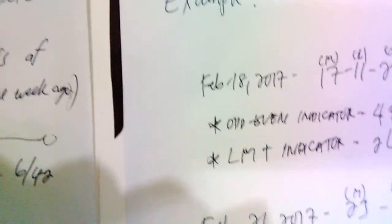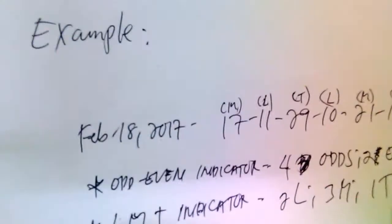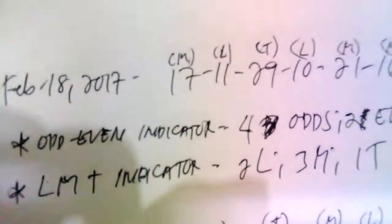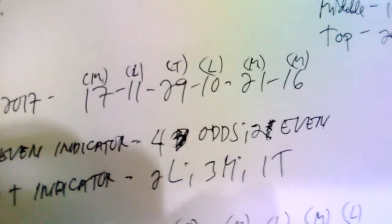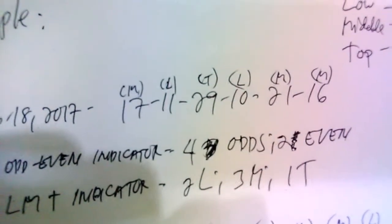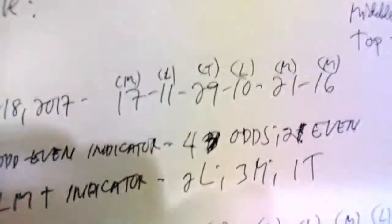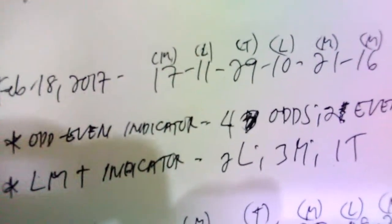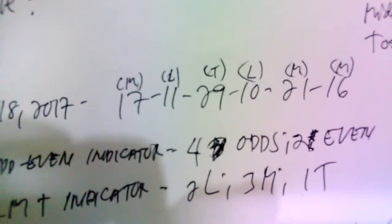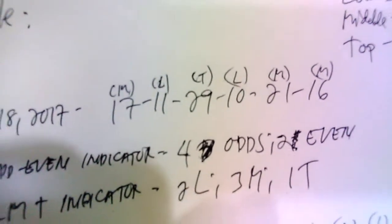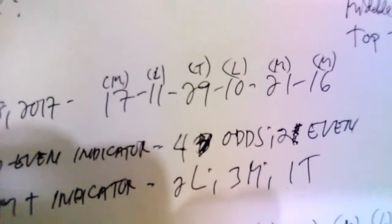To understand the concept of number classification, here is an example using an actual previous draw result. On February 18, 2017, the 6/42 results were 17, 11, 29, 21, and 16. Under the odd/even indicator, this is classified as four odd and two even — the odd numbers are 17, 11, 29, and 21. Under the LMT indicator, it is classified as 2 low, 3 middle, 1 top — the low numbers are 11 and 10, the middle numbers are 17, 21, and 16, and the top number is 29.